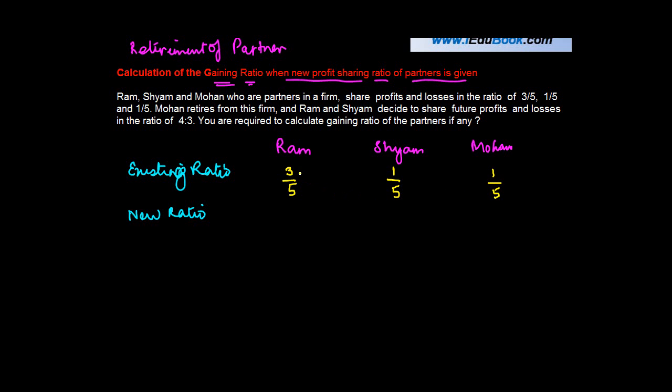The denominator is common in all cases. 3 plus 1 plus 1 gives you 5, so 5/5 equals 1. Please note that the sum of these three profit sharing ratios is always equal to 1. Mohan retires from this firm - he must have some better business to do, so he decided to move out.